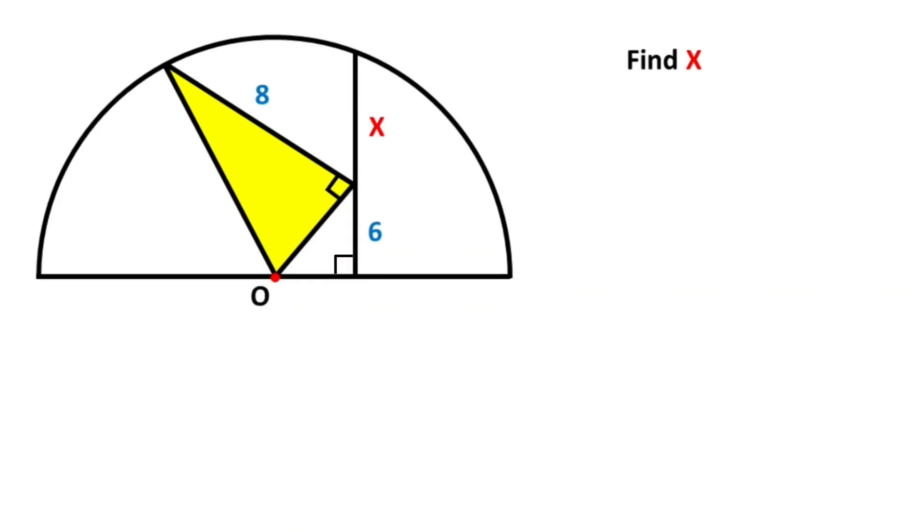Hello everyone! In this video we have a semicircle where O is the center. This length is given as 6 units, here is given as 8 units, and this angle is 90 degrees.